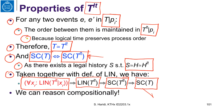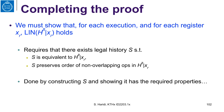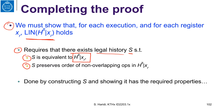So we can reason compositionally and complete the proof. What we have to do now is show that for each execution and for each register, the logical time history restricted to that register is linearizable. This requires that there exists a legal history S that is equivalent to the logical time history restricted to register XR, and S preserves the order of non-overlapping operations in the logical time history restricted to XR.